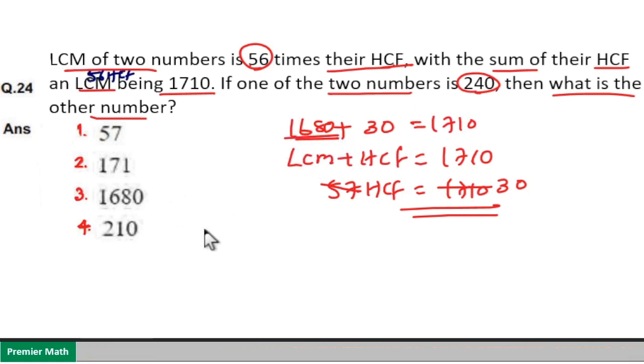If LCM is 1680, LCM of two numbers where one number is 240, LCM of 240 and the other number is 1680.